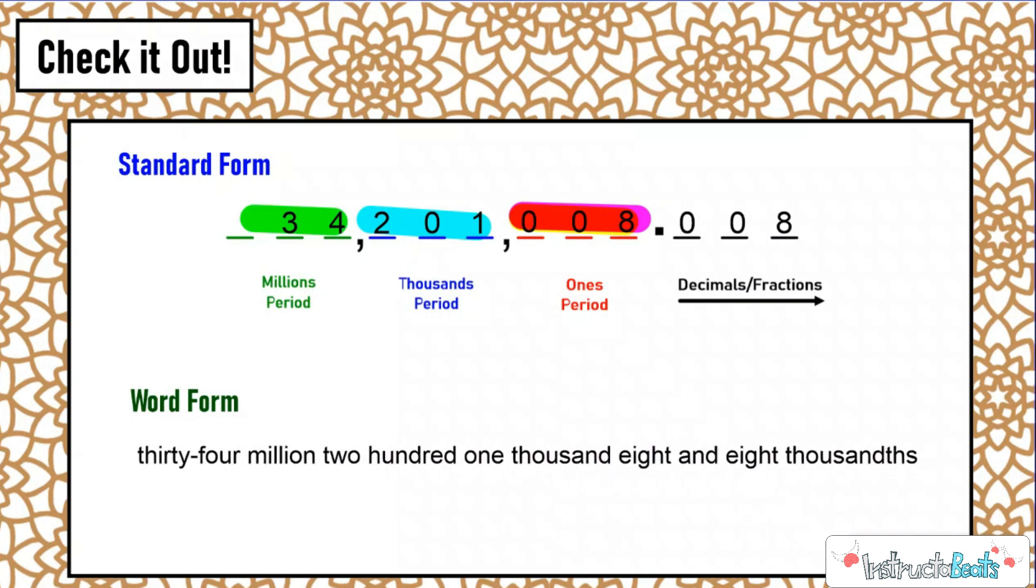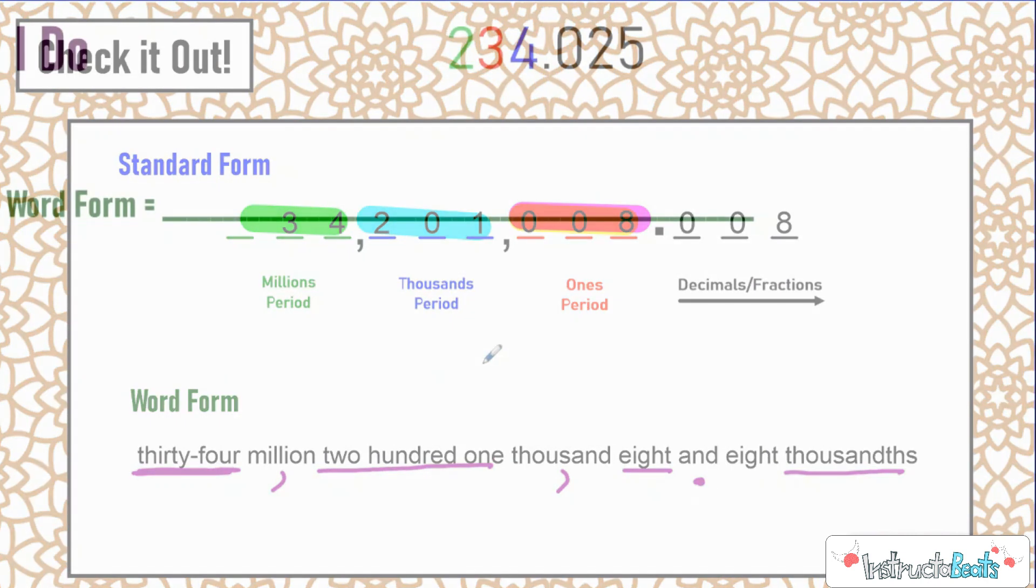So one thing I just want to point out real quick, you notice that anytime you're writing a 10 and a ones place, like 21, 32, there's always a hyphen between that. So 34 million, that's my comma, 201,000, there's my comma, 8, there's my decimal with the and, and then 8 thousandths, there's my last place value. When you highlight it like this, you can kind of see how it matches up.